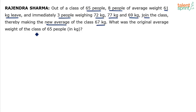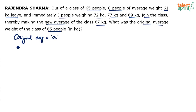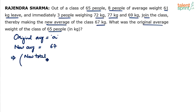Based on this, what was the original average weight of the class of 65 people? That is the question. Let us assume the original average is equal to A. The new average is given as 67 kg. Let's calculate it. The new average equals new total divided by new number of students, which equals 67.